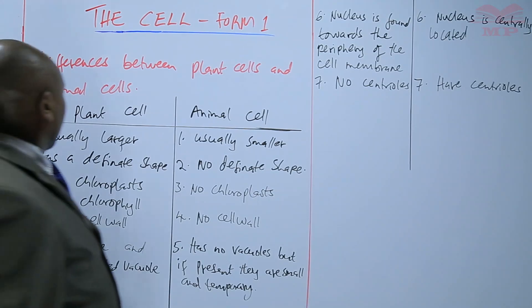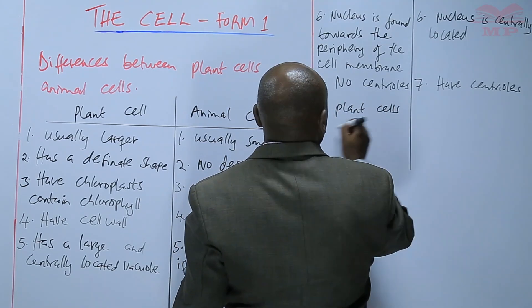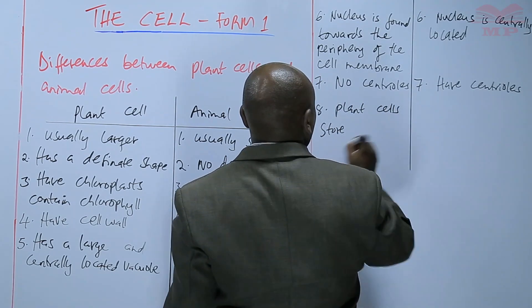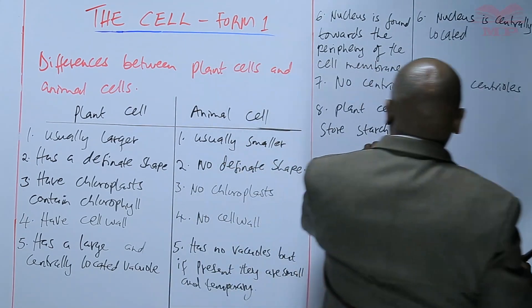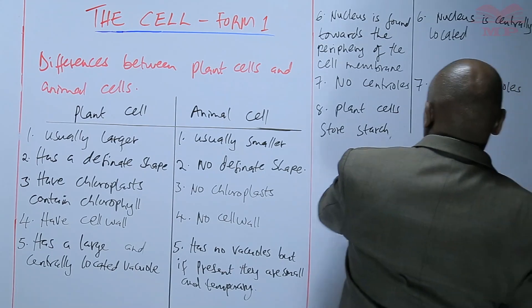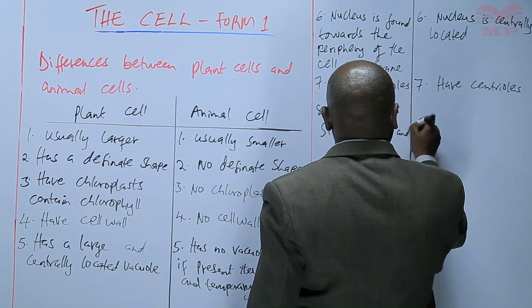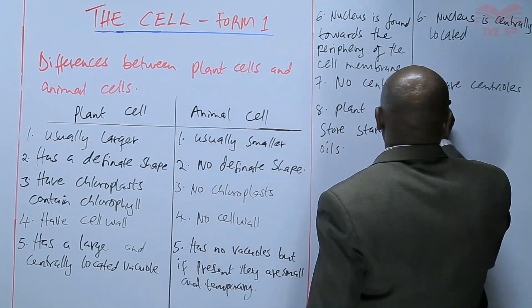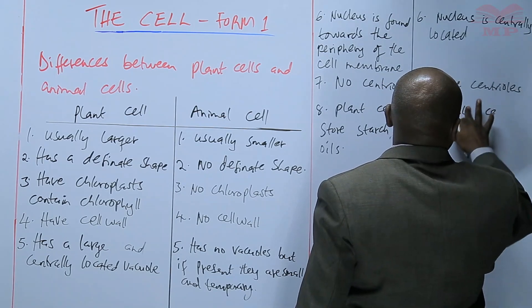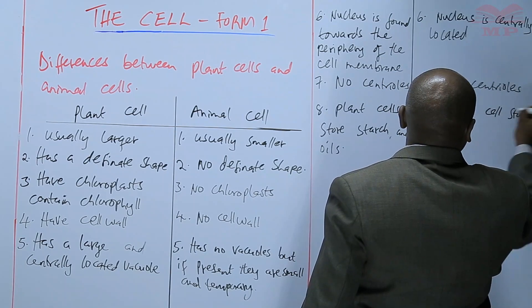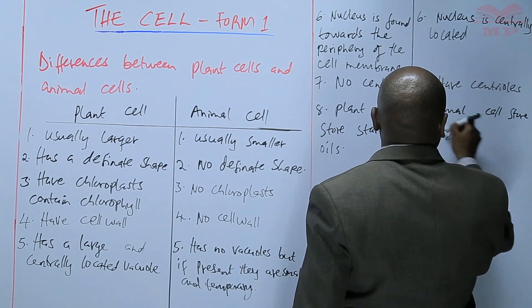Plant cells store starch and oils. Animal cells store glycogen and fats.